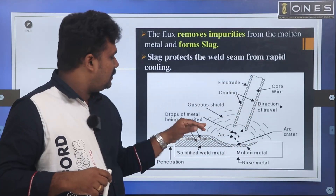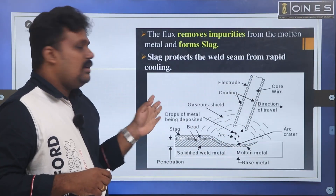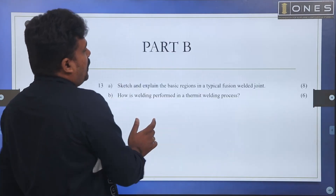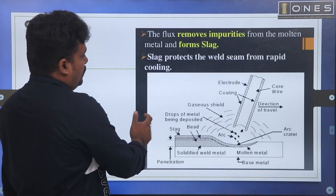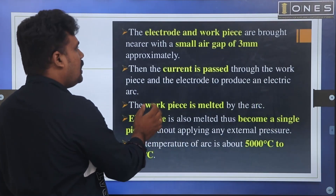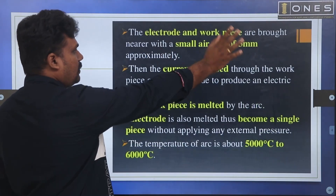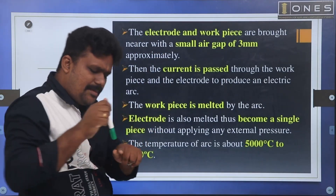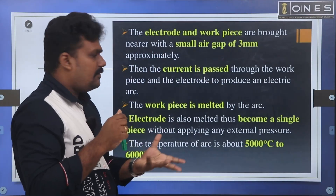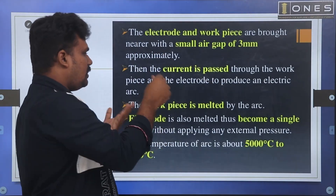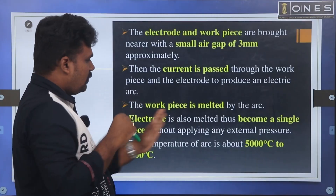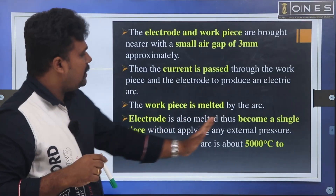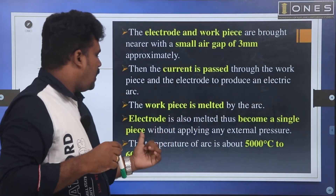The metal electrode is a thin coated rod. This electrode melts during the process. The electrode melts in place, forming the weld.